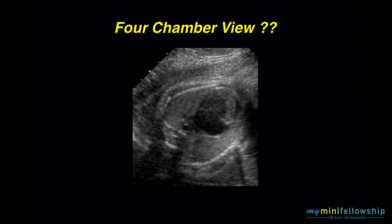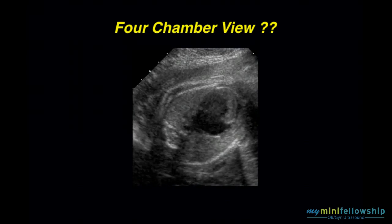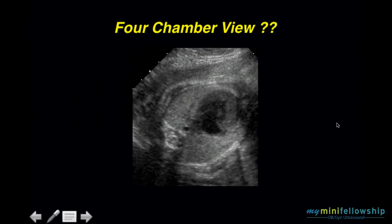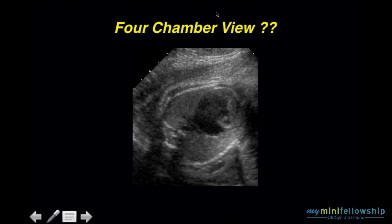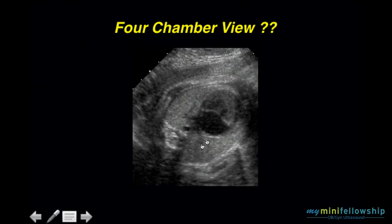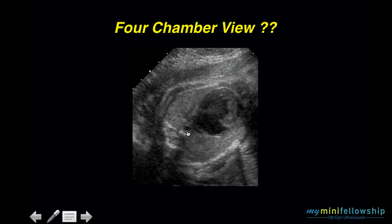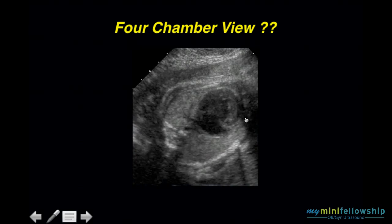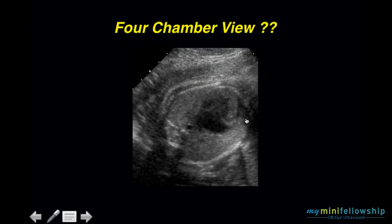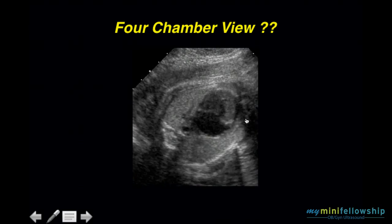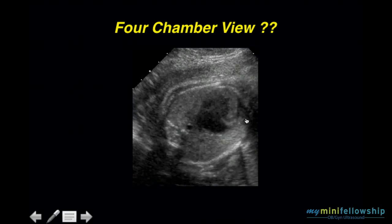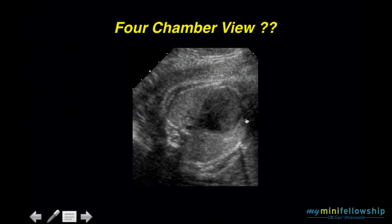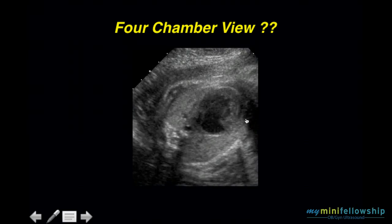That system works in all orientations. So when we're looking at this case and we see spine, descending aorta, left atrium, left ventricle — oops. All of a sudden, without question, we have an abnormal four-chamber view.